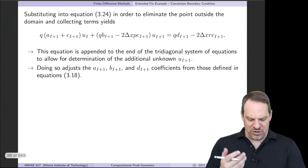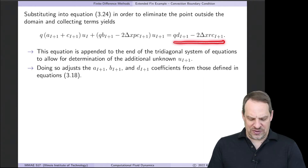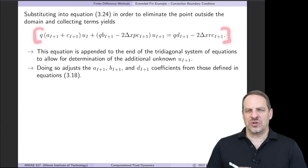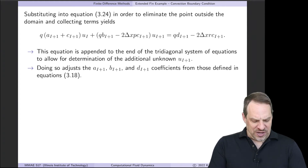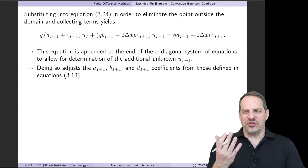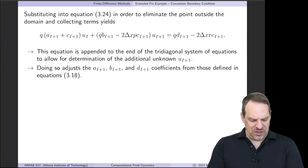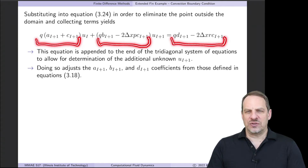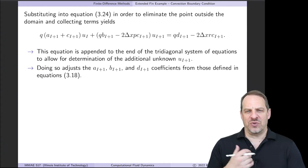We gather up the terms: everything multiplying U sub I, everything multiplying U sub I+1, and everything known goes on the right-hand side. This gives us an additional equation to append to the end of our system of linear algebraic equations. Before we had equations for the interior points from 2 through capital I; now we have an additional unknown at capital I+1 and this equation to append, giving us capital I equations for capital I unknowns. In the tridiagonal system, we simply modify the coefficients a, b, and d to incorporate these new terms.